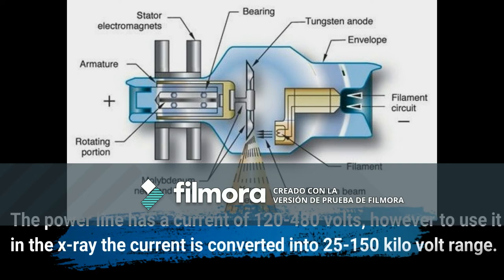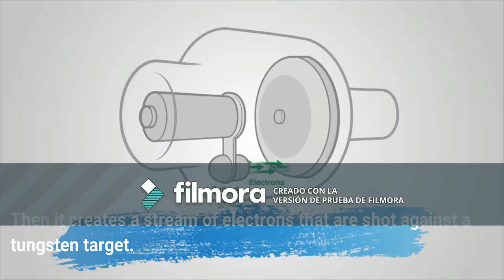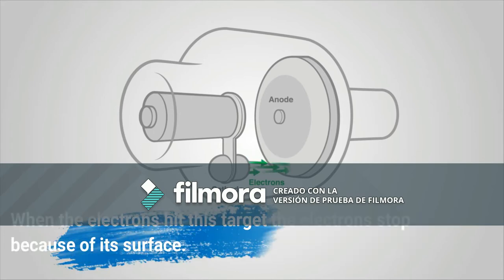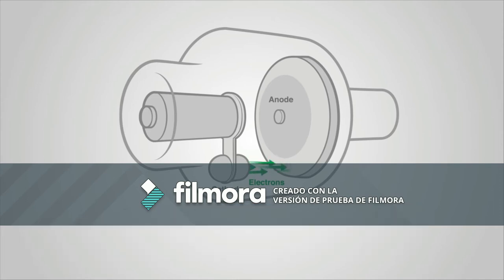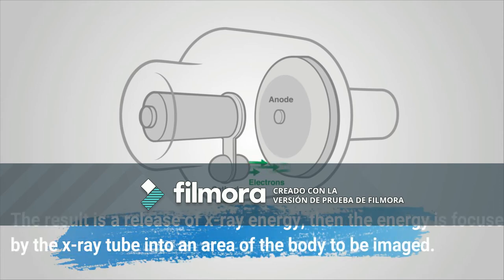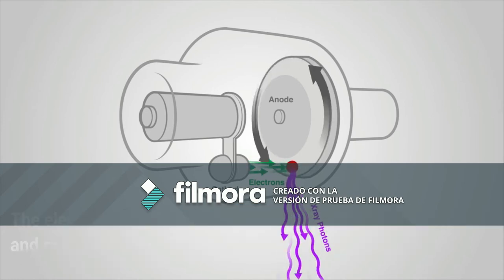The power line has a current of 120–480 volts; however, to use it in the x-rays, the current is converted into the 25–150 kV range. Then it creates a stream of electrons that are shot against a tungsten target. When the electrons hit this target, the electrons stop because of its surface, and the result is a release of x-ray energy. The energy is then focused by the x-ray tube into an area of the body to be imaged.